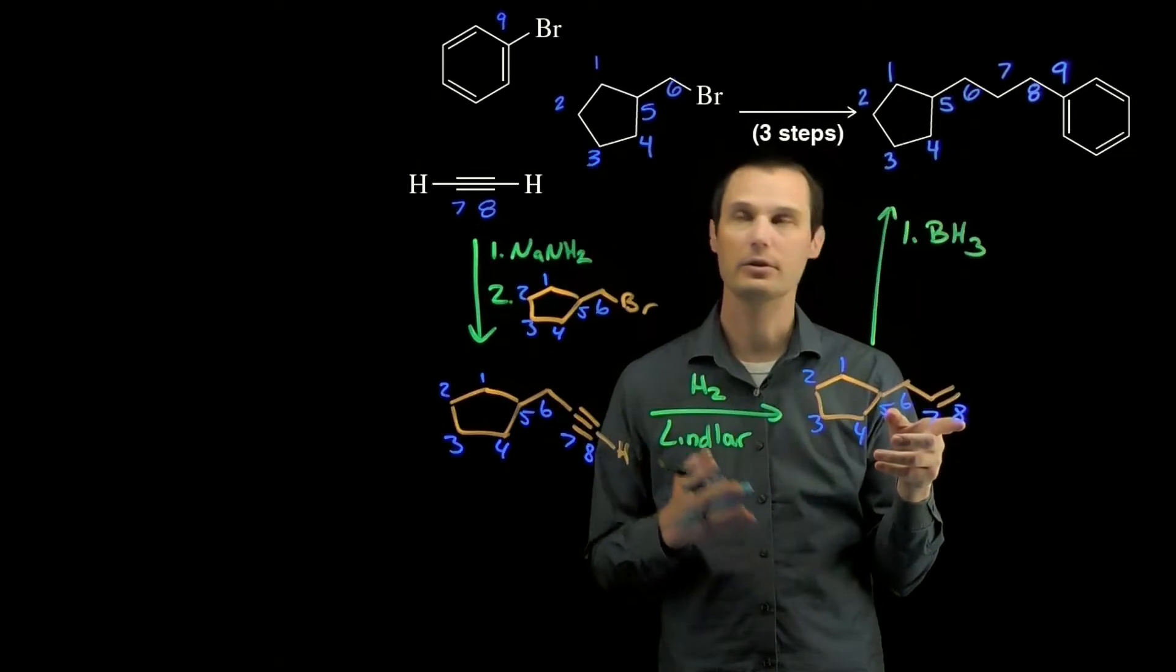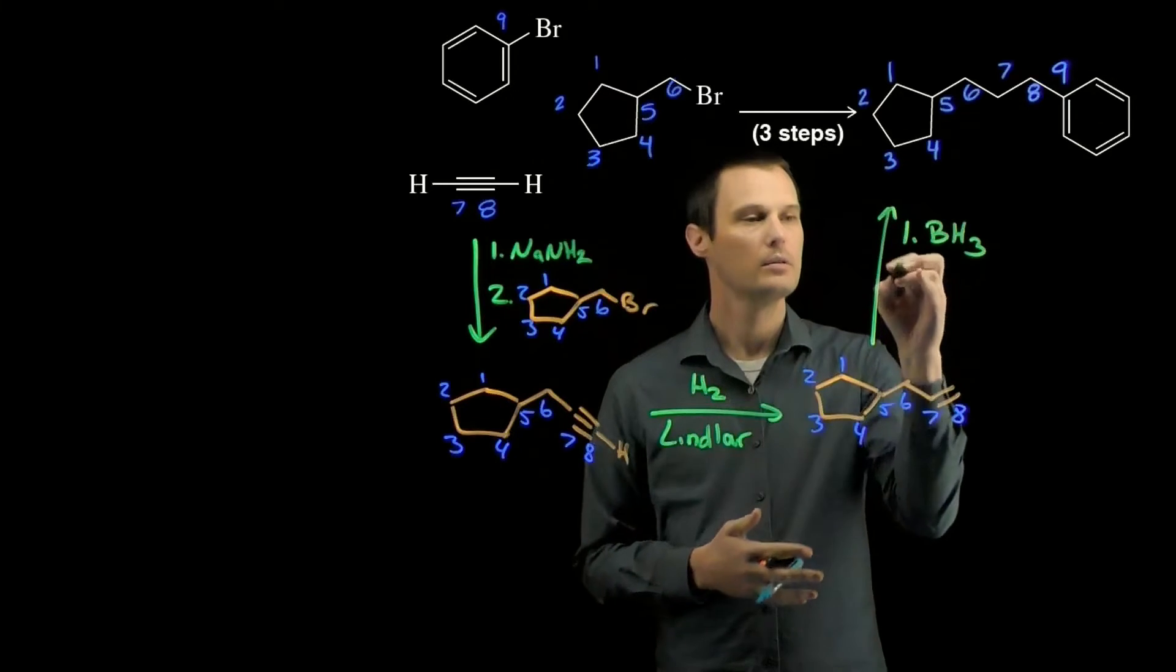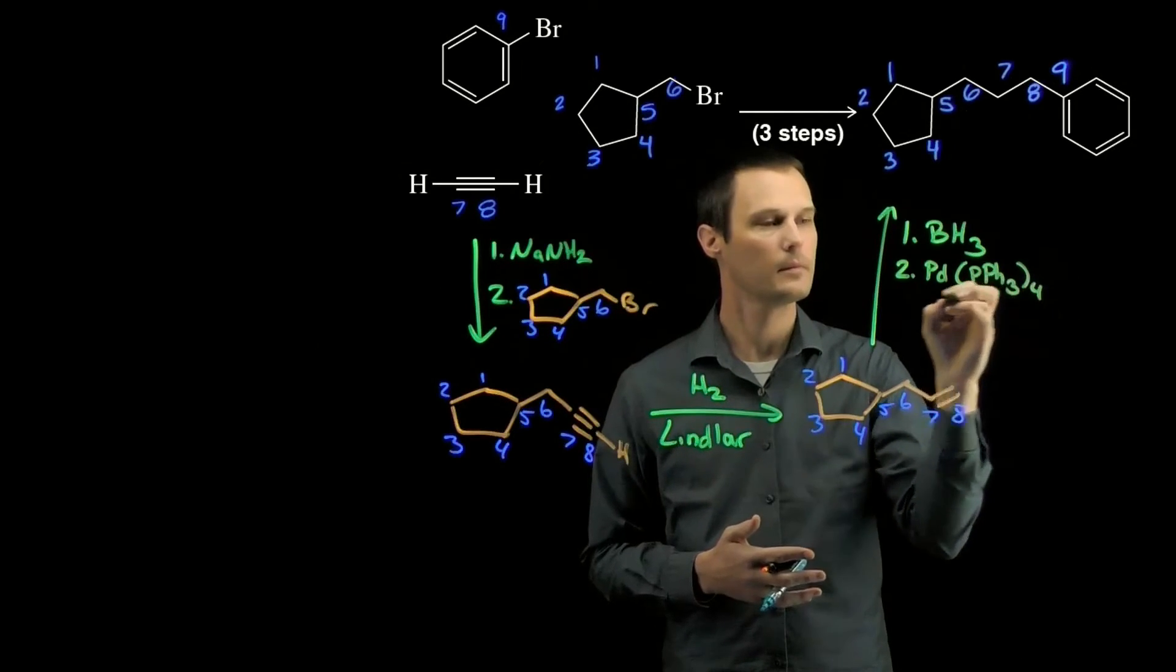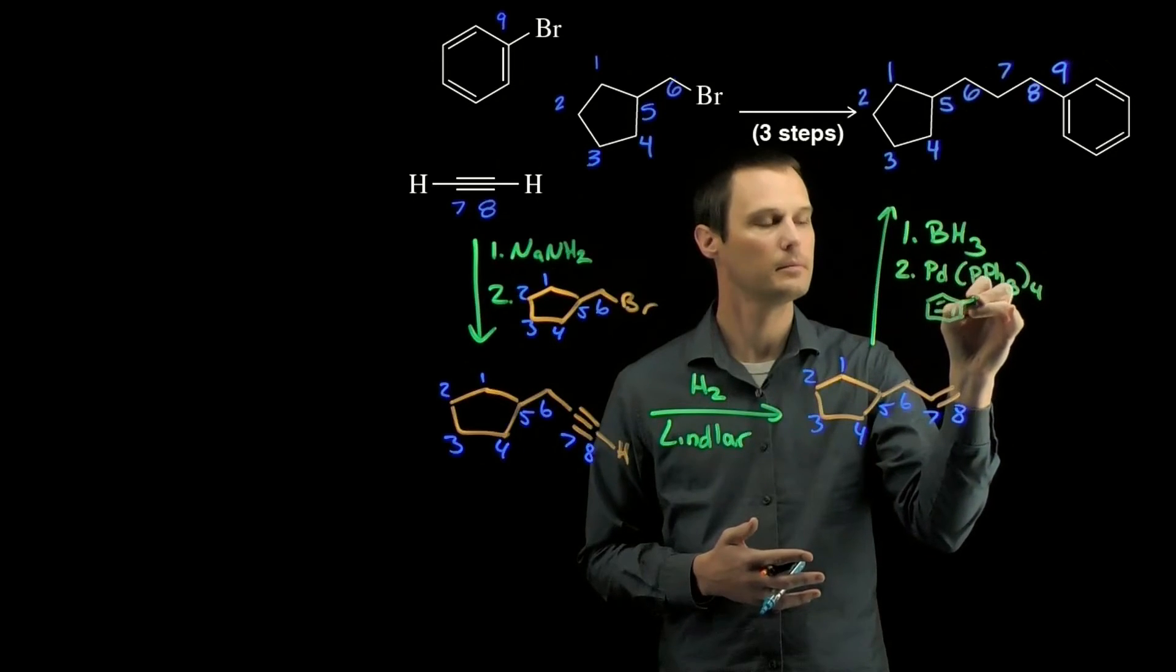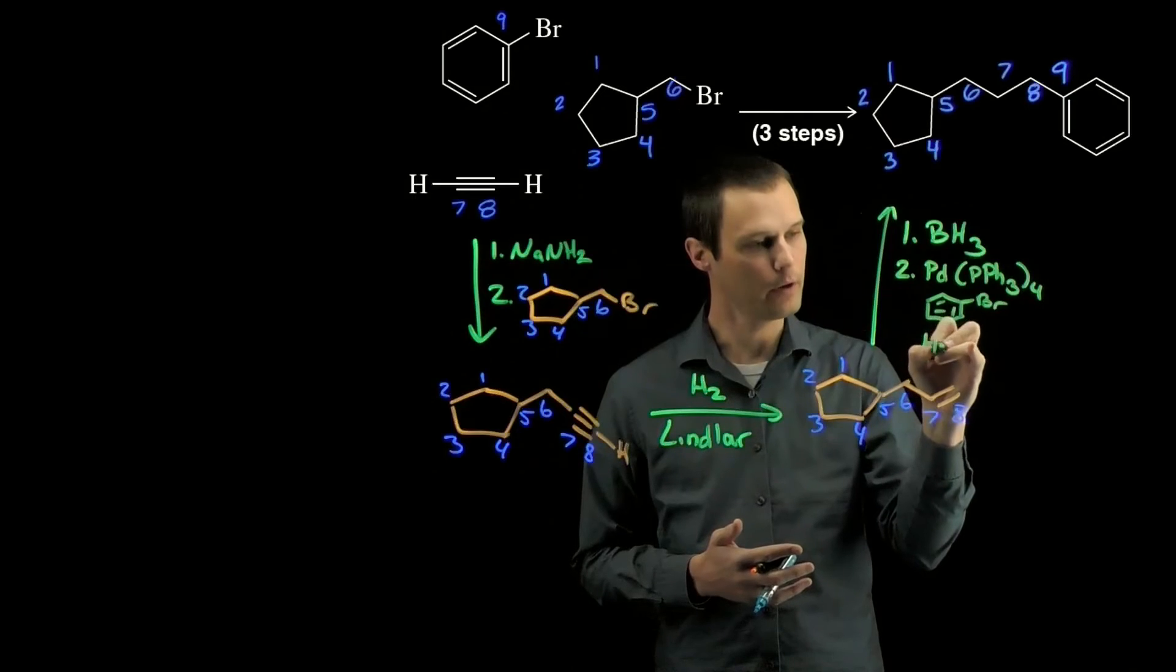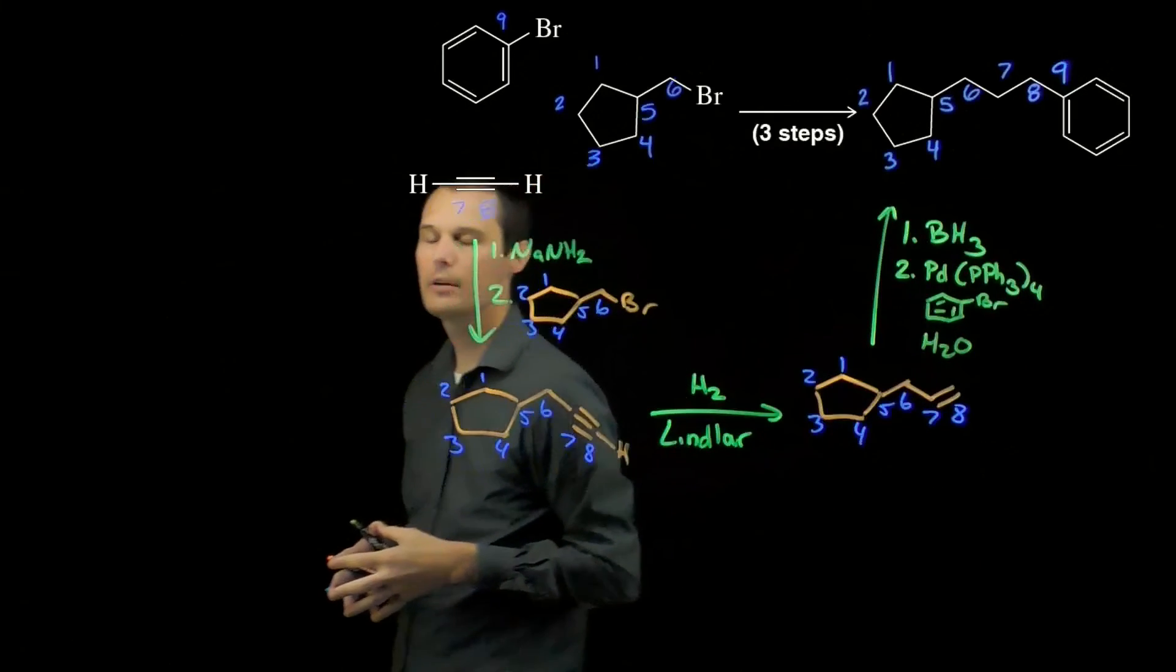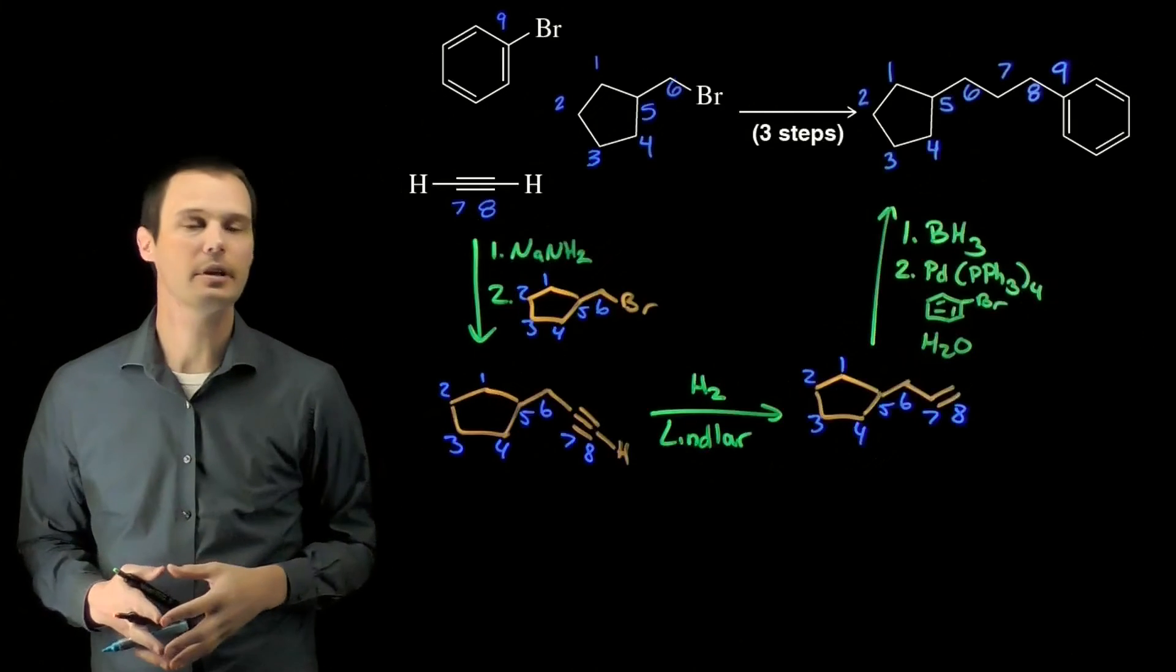I can then use that to do the cross-coupling reaction with carbon number nine of my other starting material. So my second step here will be the palladium catalyst and the bromobenzene, and also with that we'll have water as the solvent for this reaction. That will form a bond between carbon eight and carbon nine and form our desired product. This is how we can synthesize this product from these starting materials in three steps.